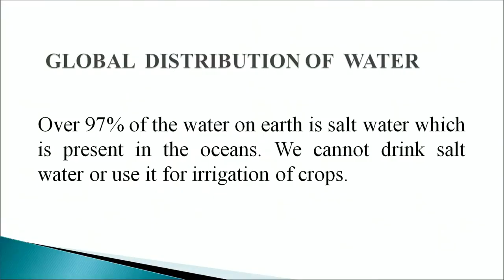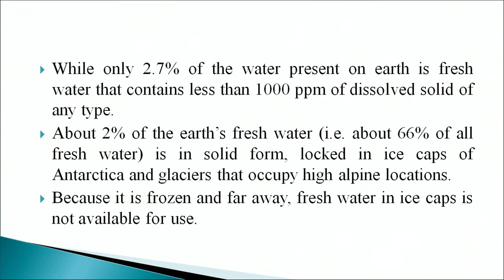Regarding the global distribution of water: over 97 percent of water on earth is salt water present in the oceans. We cannot drink salt water or use it for irrigation of crops. Only 2.7 percent of water on earth is fresh water, containing less than 1000 ppm of dissolved solids. About 2 percent of the earth's fresh water — approximately 66 percent of all fresh water — is in solid form, locked in the ice caps of Antarctica and glaciers that occupy high alpine locations.